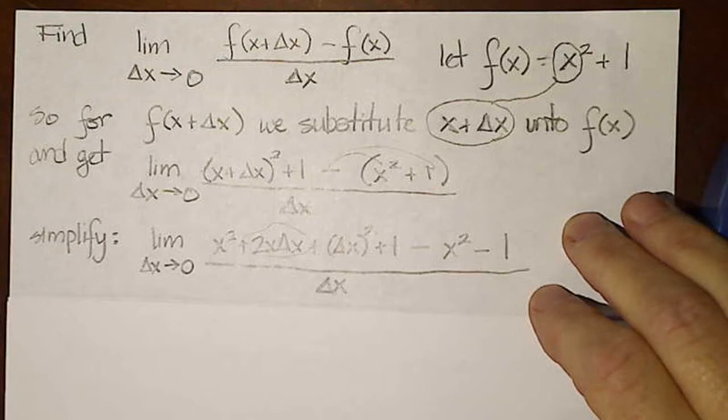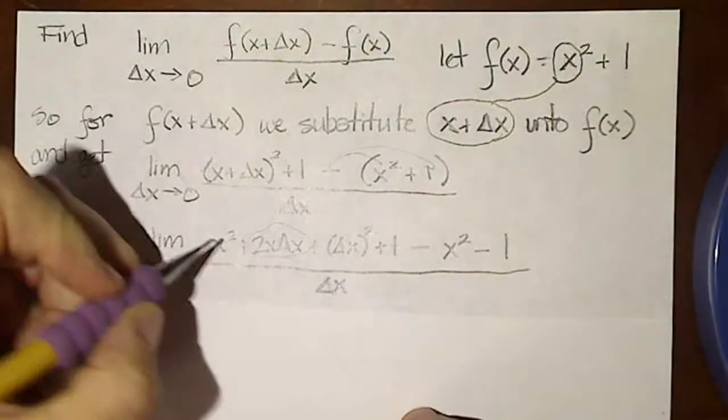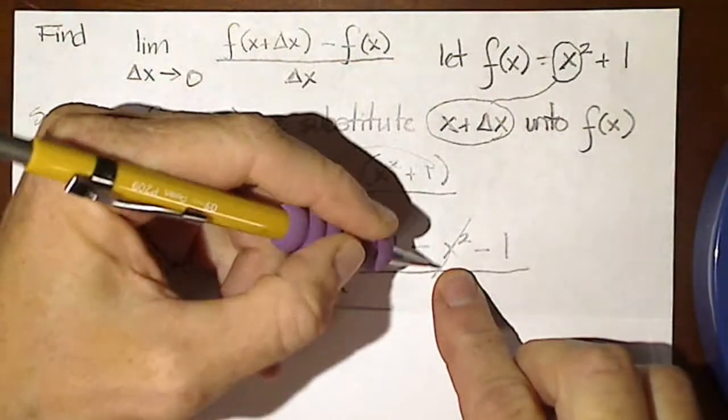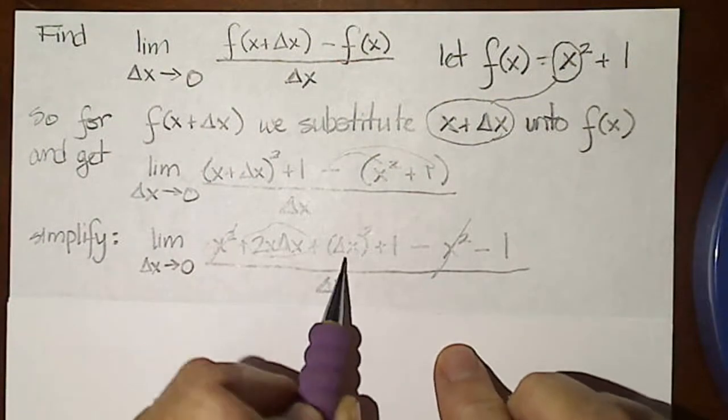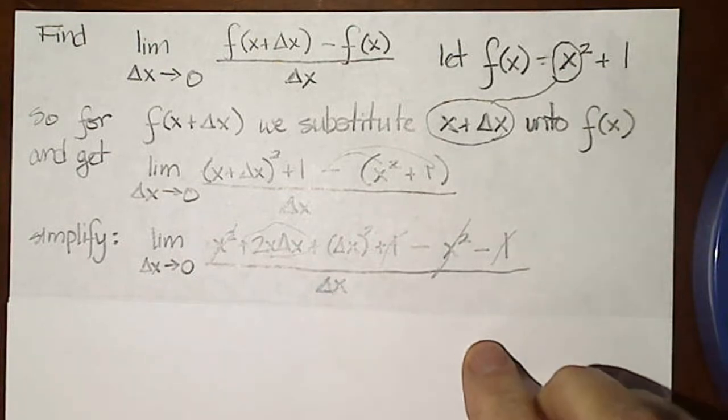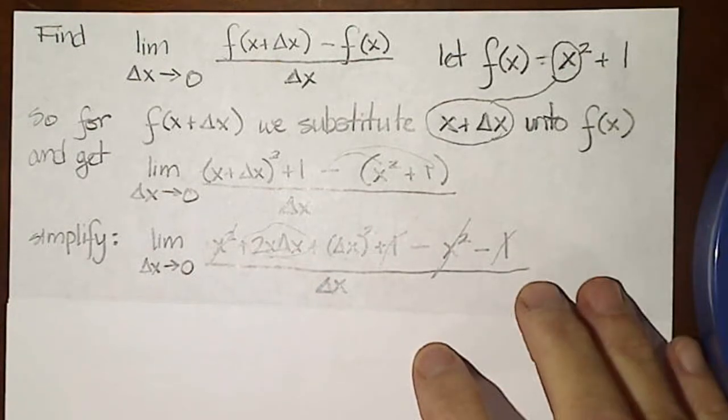And I look at what I've got and I see that I have an x squared minus an x squared, so those cancel. And I have a 1 minus a 1, so those cancel each other out.